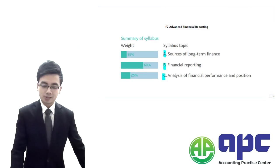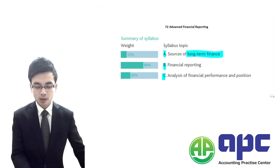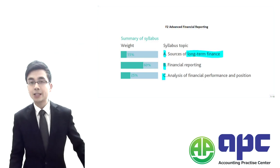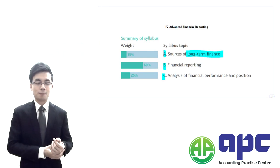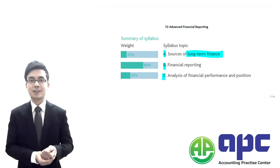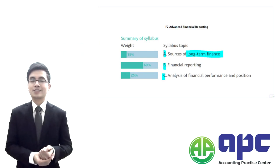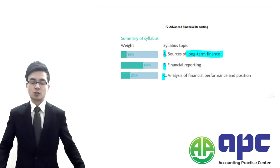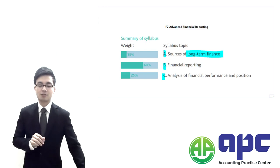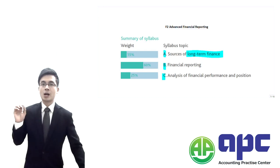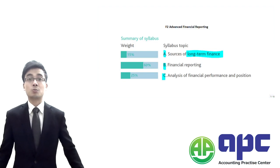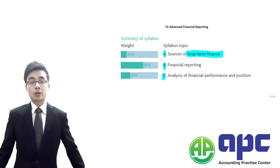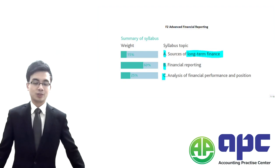Firstly, we're going to talk about long-term finance. In the past, looking at CIMA F1, we looked at short-term finance, mainly focusing on the working capital issues. But right now in CIMA F2, we are mainly focusing on long-term finance, such as how we're going to issue shares and how we're going to borrow long-term debt for the company.